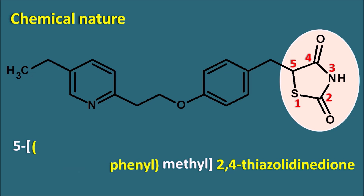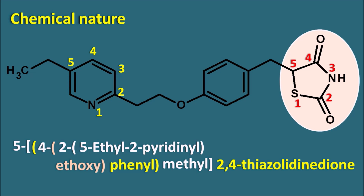The 5-methyl group is further attached to a phenyl ring, which bears a side chain at its 4th position. That side chain is an ethoxy group, written as '4-ethoxy.' This ethoxy group is connected to a pyridine ring system. Numbering the pyridine 1 through 5, it is attached at position 2 and bears an ethyl group at position 5 — written as '2-(5-ethyl-2-pyridyl).' This gives the full name of pioglitazone: a thiazolidinedione derivative with a large side chain at the 5th position.